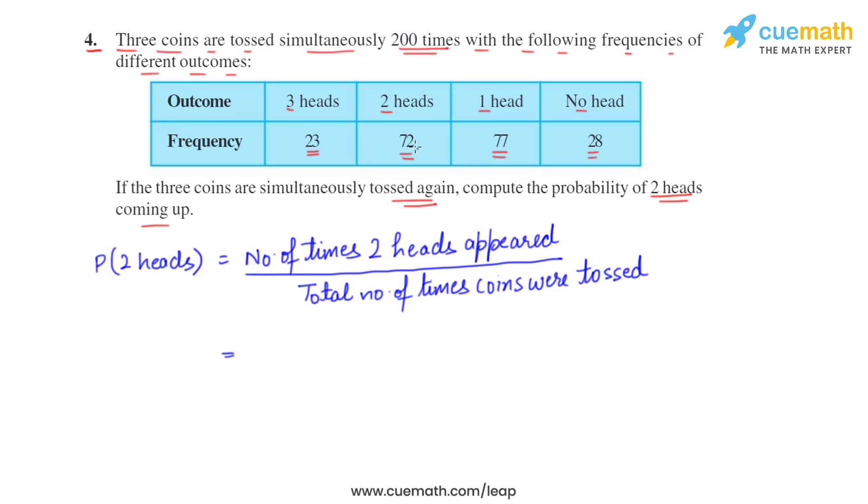The number of times two heads appeared is 72, and the total number of times coins were tossed is 200. So 72 by 200, which can be simplified to 9 by 25. So 9 by 25 is the probability of getting two heads when the coins are tossed.